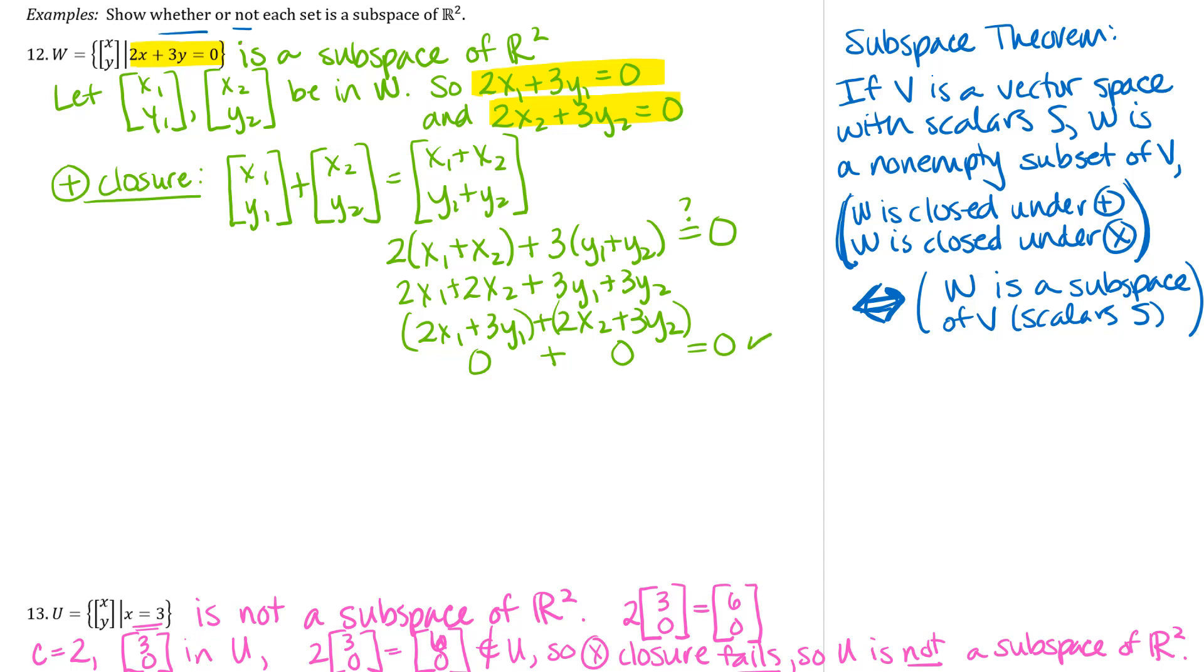So that means that this sum of these two vectors is in the set W. So I wrote up here my claim that that is in the set W and then below that I have my justification for that claim.